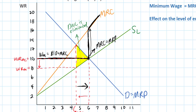So is a minimum wage always going to increase employment in a monopsonistic labor market? If that's the case, perhaps government should raise the minimum wage to $12, $14, or $15. Let's illustrate the effect that an even higher minimum wage would have on this market. As we're going to see, an increase in the minimum wage does not always lead to an increase in employment.